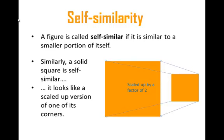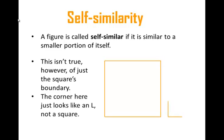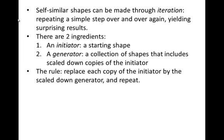Not everything is self-similar. If I didn't have the solid interior and I just had the square's boundary, this wouldn't be self-similar, because if you look at some small portion of it — say its corner — the corner looks like an L, not a square. So how would you get a self-similar shape? Well one way to build a self-similar shape is through iteration: repeating a simple step over and over again, which will yield surprising results.